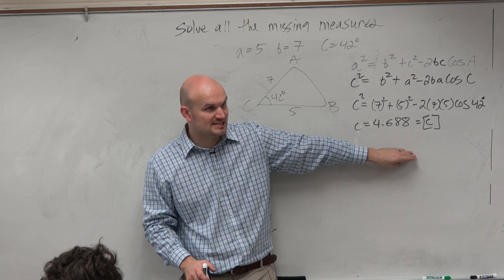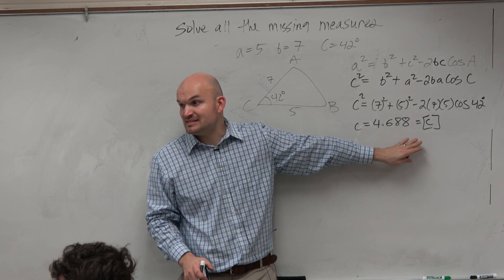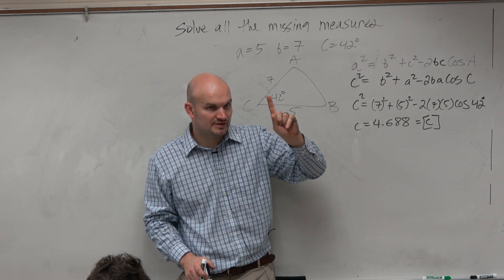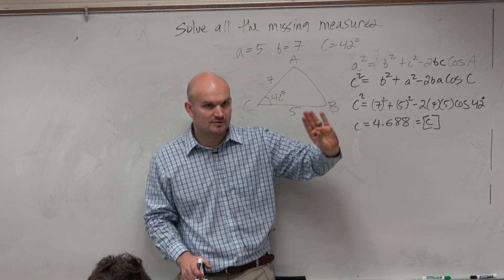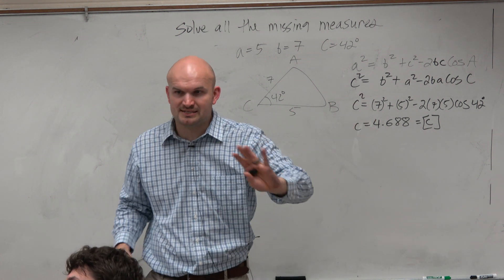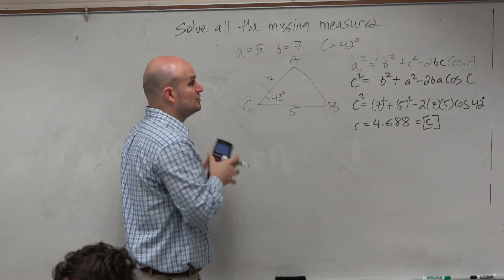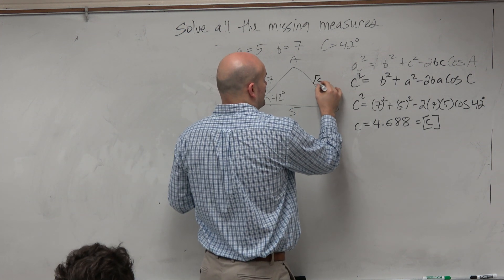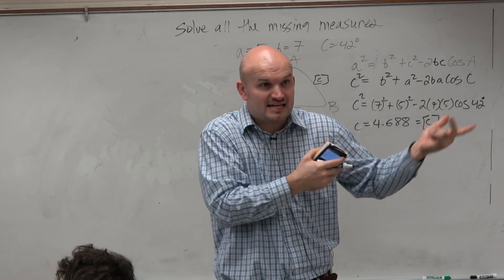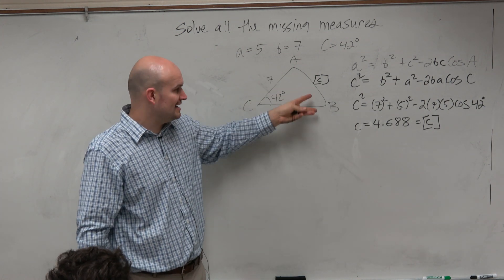Now on the next step — we found the missing side length. Now we have two missing angles. Really, all we need to do is find one missing angle. Now that we have the missing side length, could we go back and use the law of cosines again to find A or B? Yes, and we just did that formula in the last example. So if you're comfortable with the law of cosines, use it again to find the missing angle A or B.